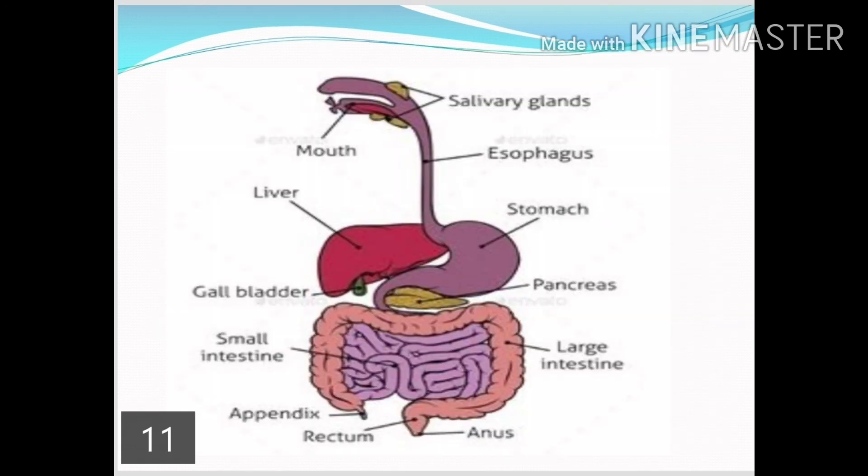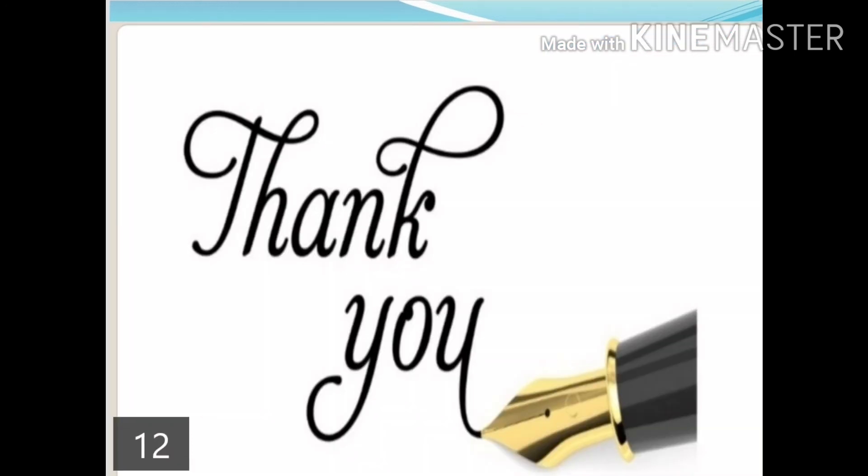Here you can have a look at an overall view of the digestive system and the organs involved. First, the mouth, which contains the salivary gland; then the esophagus, stomach, small intestine, liver, gallbladder, and pancreas as associated glands; then the large intestine, rectum, and anus. This is all about human digestion, or the human digestive system. Thank you so much — see you in the next class. Till then, take care of yourself.